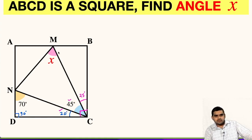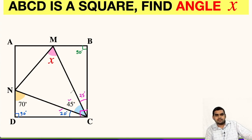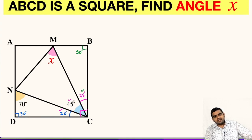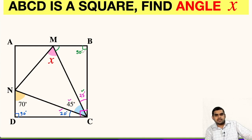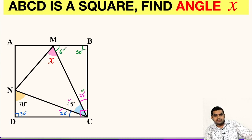Moving ahead, let us focus on triangle MBC. Angle B will be 90 degrees because ABCD is a square. This angle is 90 and the angle we found is 25 degrees. So the remaining angle will be 180 minus 90 minus 25, which gives us 65 degrees.